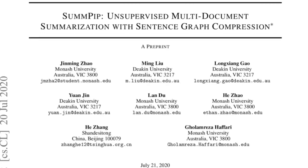Today we'll be going through this paper titled SUMPIP: Unsupervised Multi-Document Summarization with Sentence Graph Compression. It's a pretty recent paper that came out this year in the month of July. Let's go through the paper.